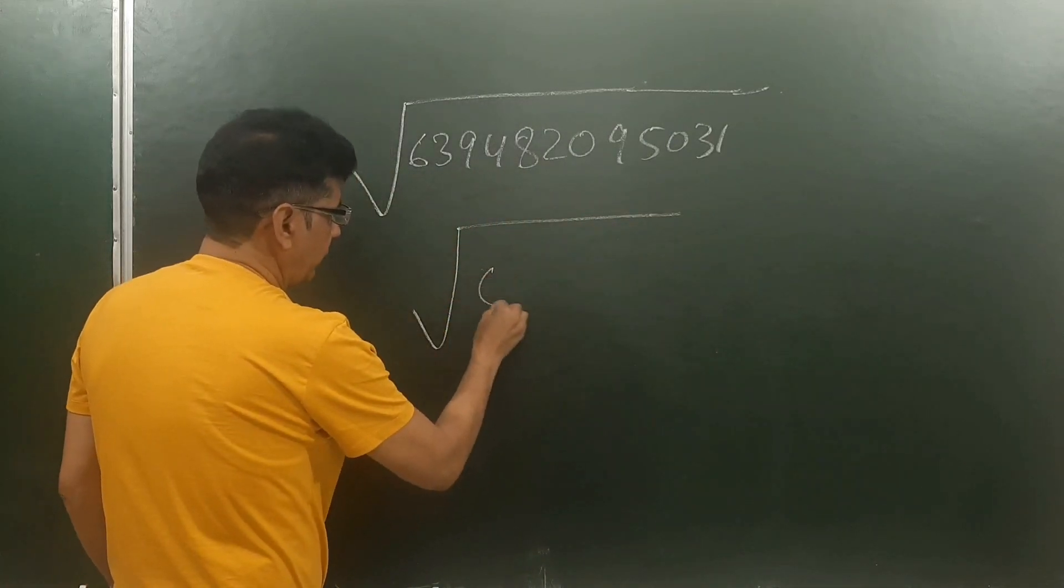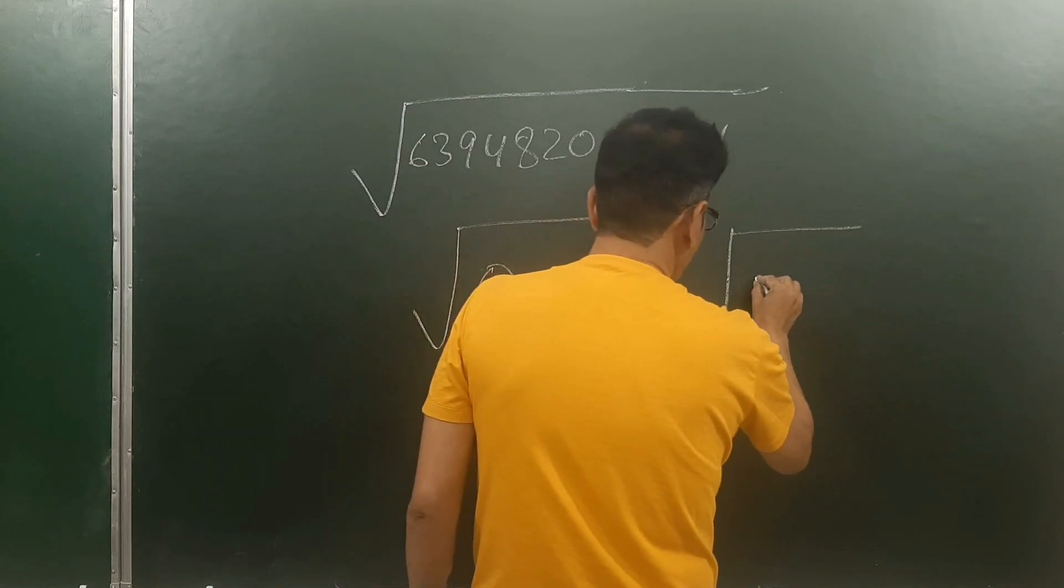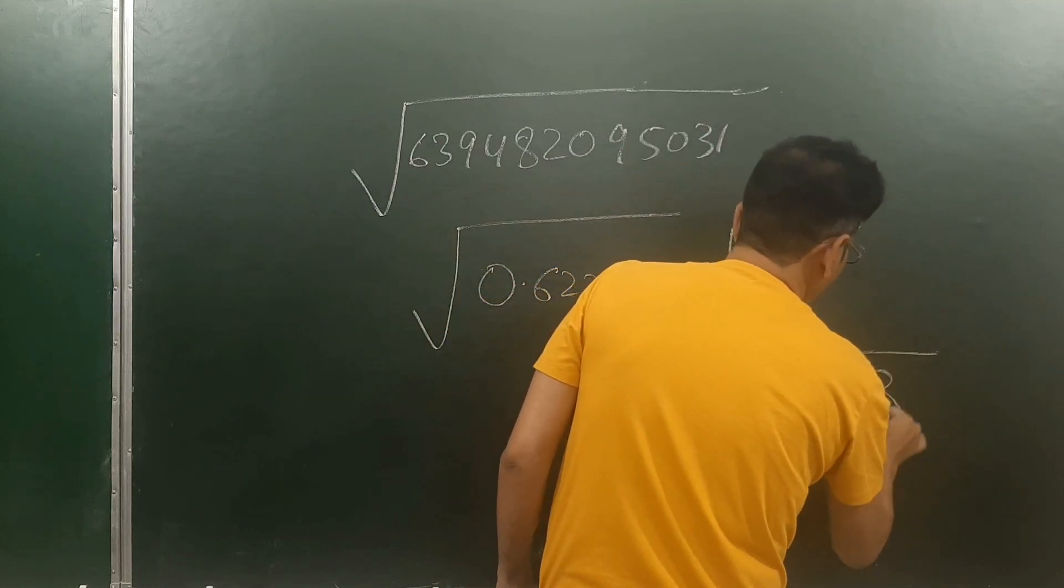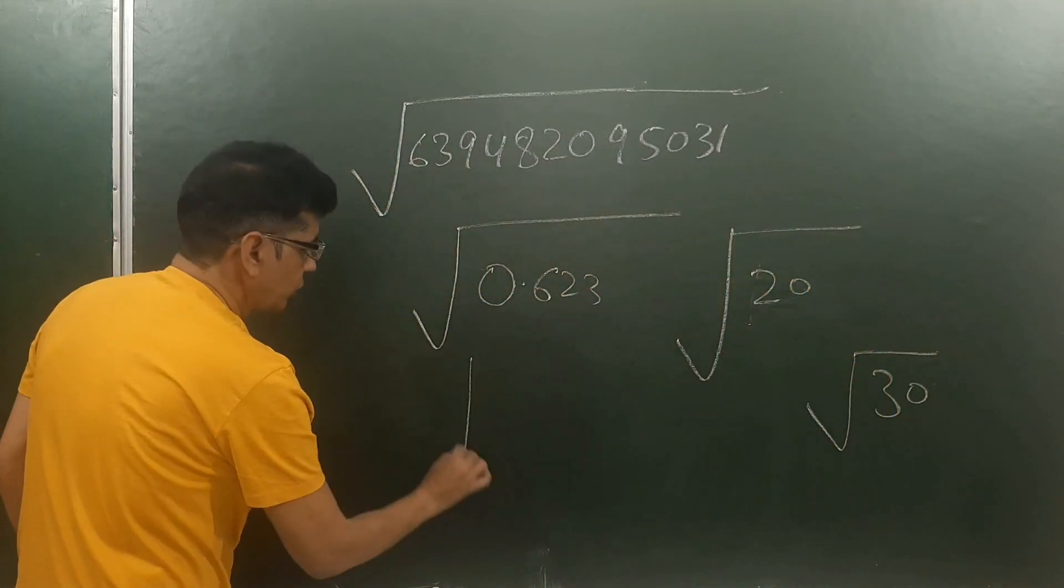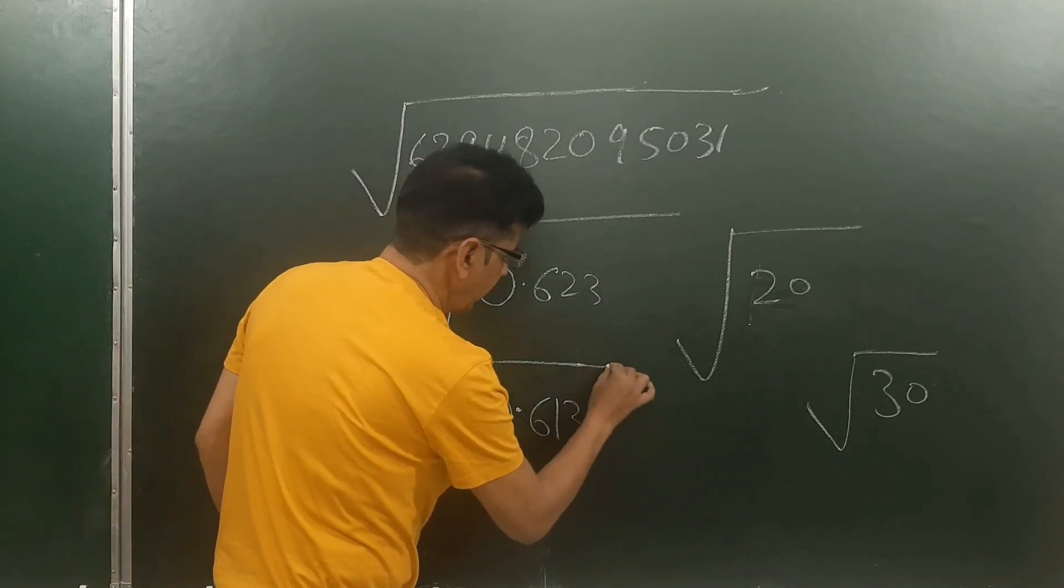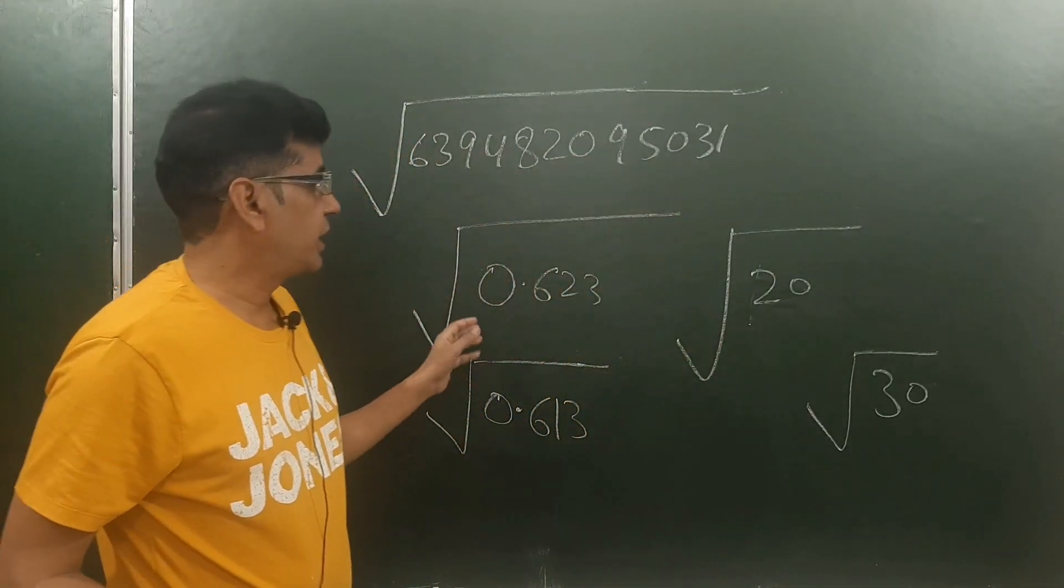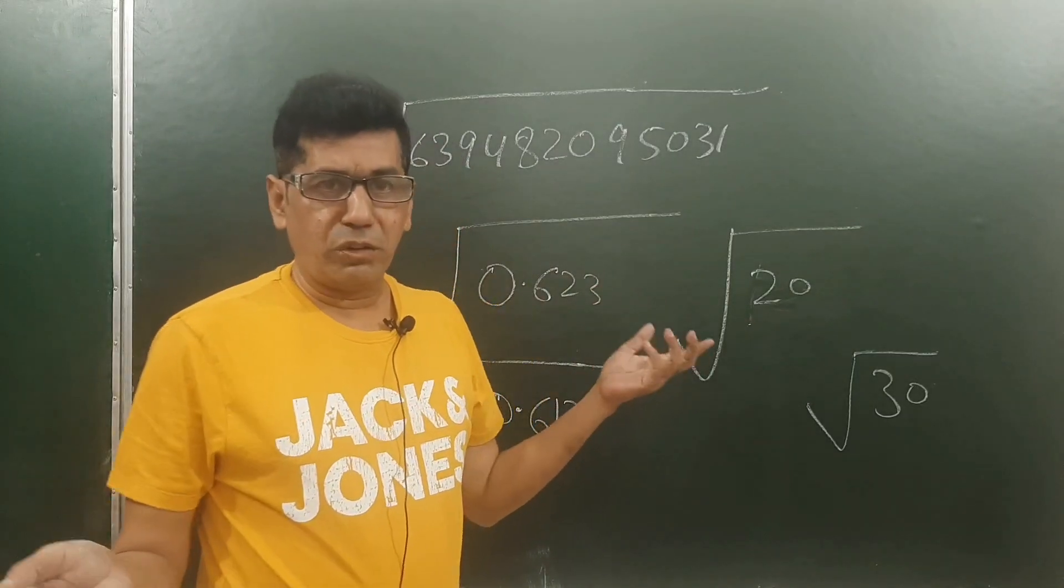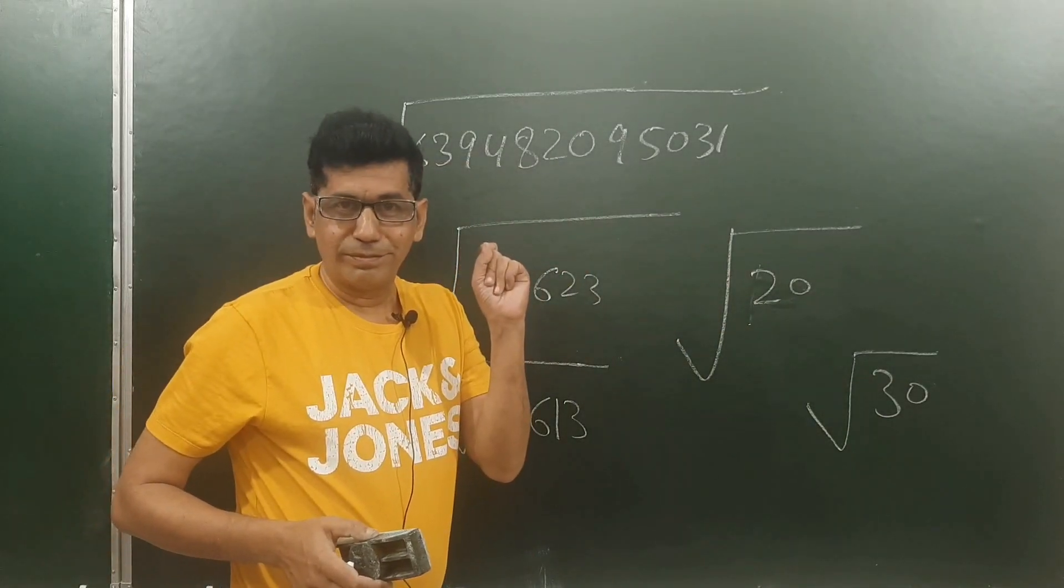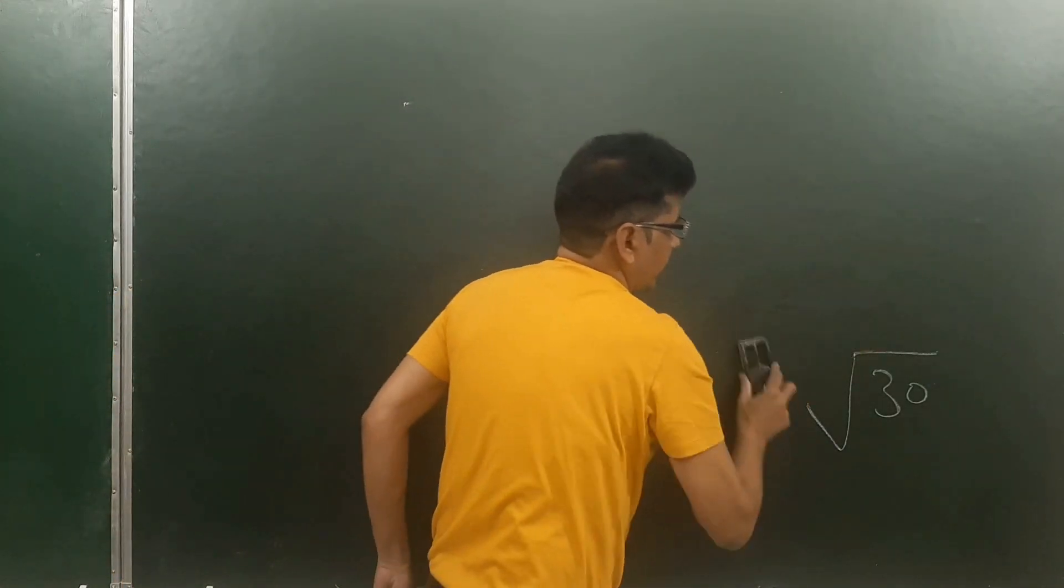If you are having such type of numbers like 5623 or square root of 10, square root of 20, square root of 30, and square root of 0.613, often you face such numbers - big numbers, decimal numbers, non-perfect square numbers - which make finding the square root very uncomfortable.